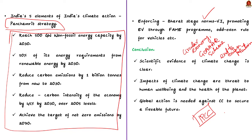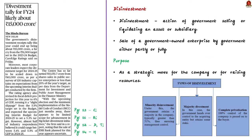Now let us move on to the next news article discussion. This article talks about disinvestment by the government. As per the article, the government's earnings from disinvestment may reach around 15,000 crore rupees this year, which is much lower than the 51,000 crore rupees target set in the 2023 budget. A survey by Care Edge Ratings suggests that the disinvestment goal for 2024–25 might be reduced to 40,000 crore rupees.